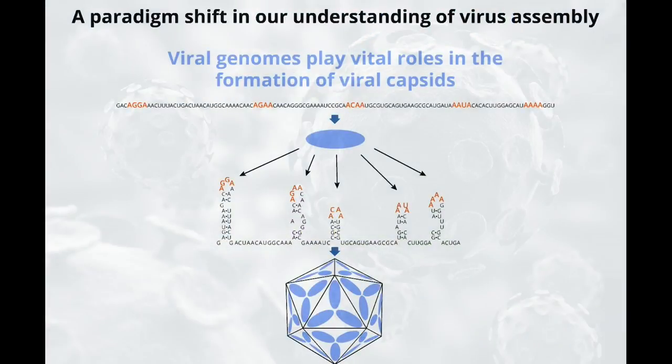A discovery that we have made with our colleagues is that there are actually cryptic signals hidden in the genomes of many viruses. When they occur and are expressed in the context of geometric shapes — we call them secondary structures — they can act collectively to enhance the formation of these viral containers.